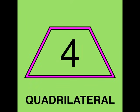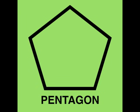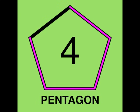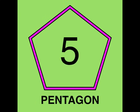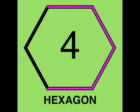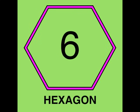Draw a hexagon up in the air. One, two, three, four, five, six. Draw a heptagon up in the air. One, two, three, four, five, six, seven.